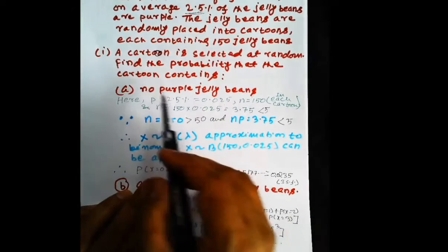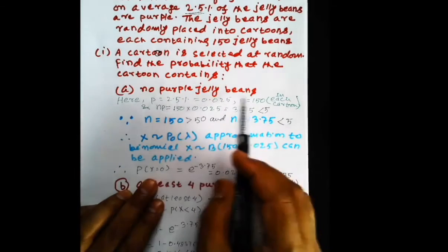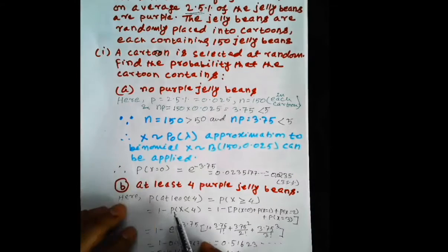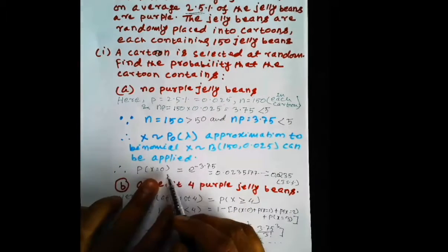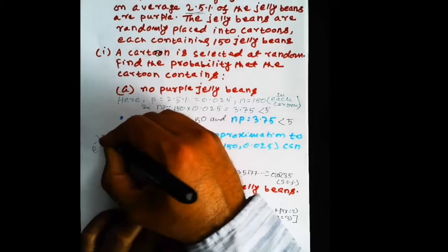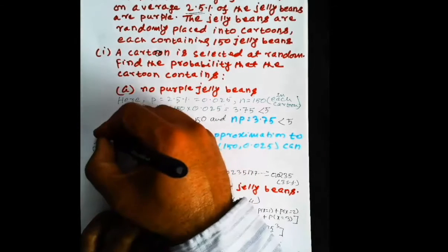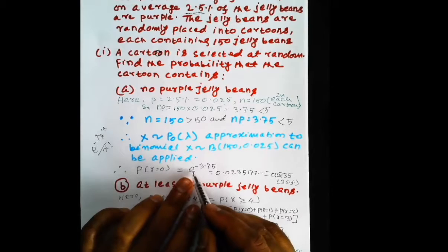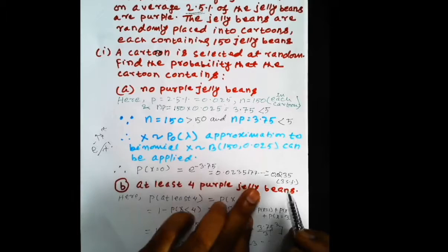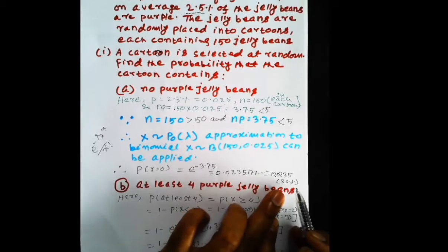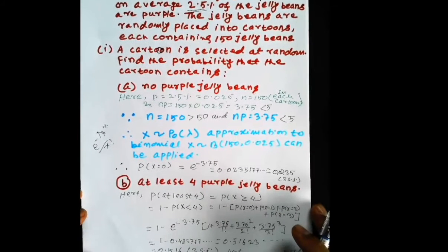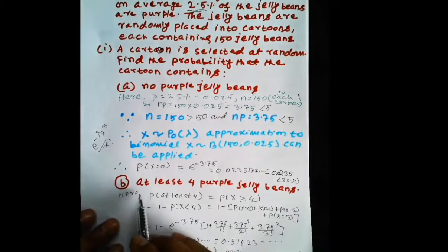Part (a): find the probability that a randomly selected carton contains no purple jelly beans, i.e., P(X=0). Applying the Poisson formula e^(-lambda) * lambda^0 / 0! with lambda equals 3.75 gives e^(-3.75). Using the calculator and rounding to three significant figures, the answer is 0.0235.